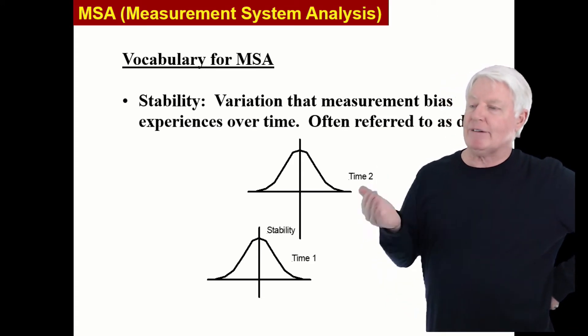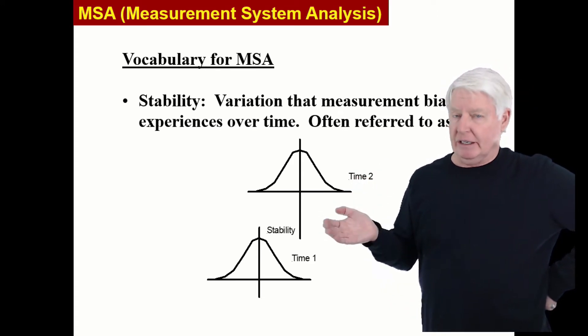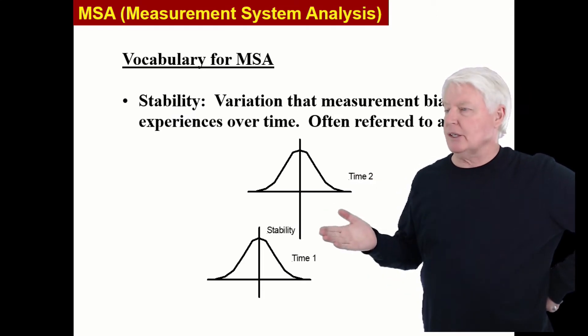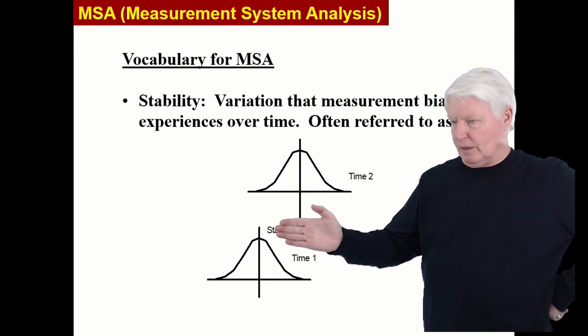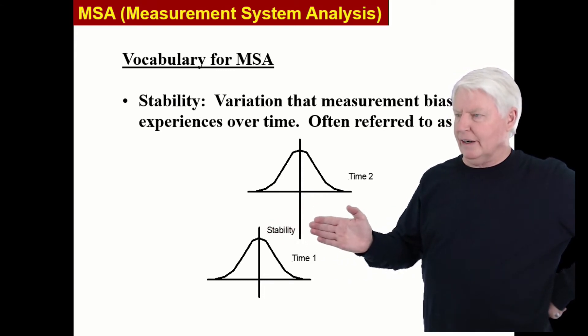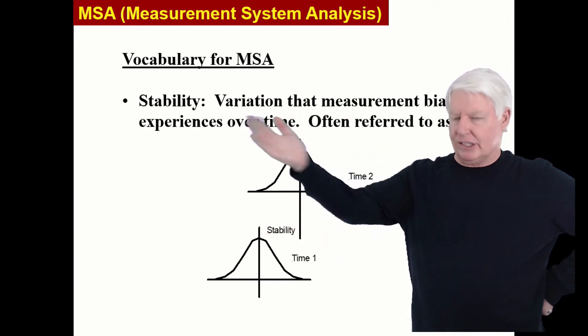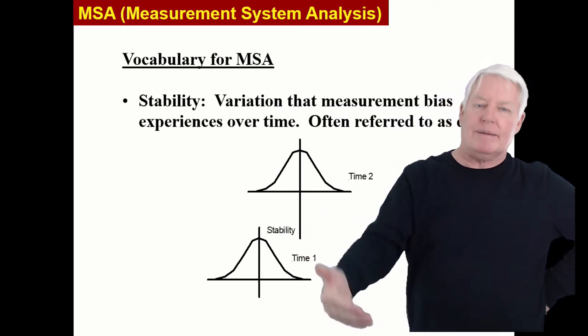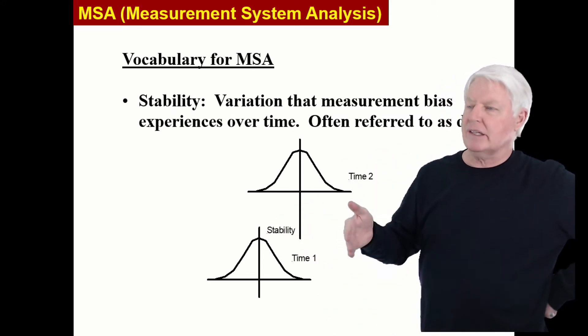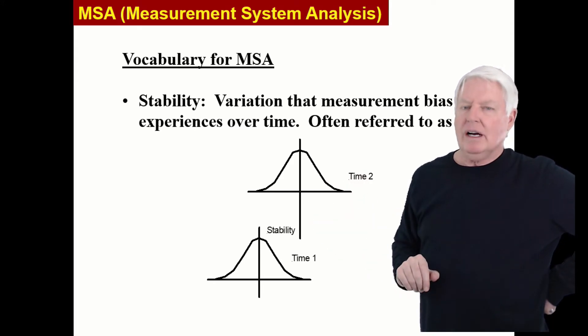How quickly it changes over time represents how stable the instrument is. Some instruments you only have to calibrate every year or so, and some instruments you have to calibrate after every use. If something could hold over a year, that would be considered a stable instrument, and one that had to be calibrated after every time you use it would be considered not as stable of an instrument.